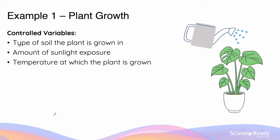Once we've selected appropriate independent and dependent variables, we need to identify and maintain all controlled variables. Some important ones include the type of soil the plant is growing in, because if this isn't kept constant it may affect the growth rate, making it difficult to tell whether it's the water volume or soil type causing the change. Another control variable is the amount of sunlight the plant is exposed to daily.